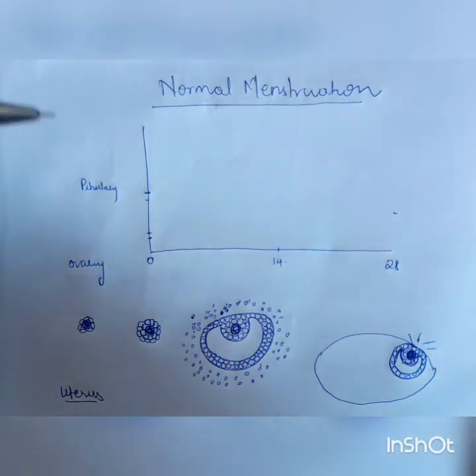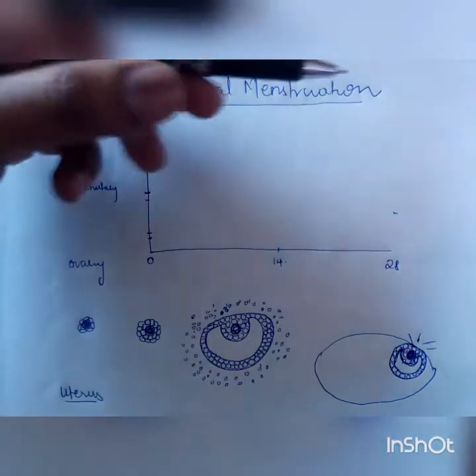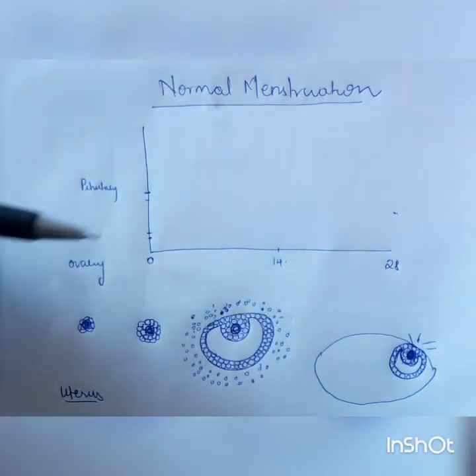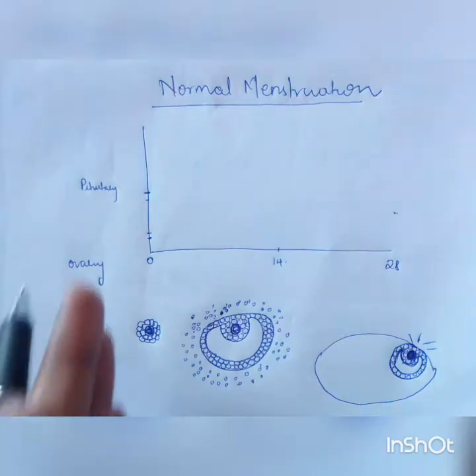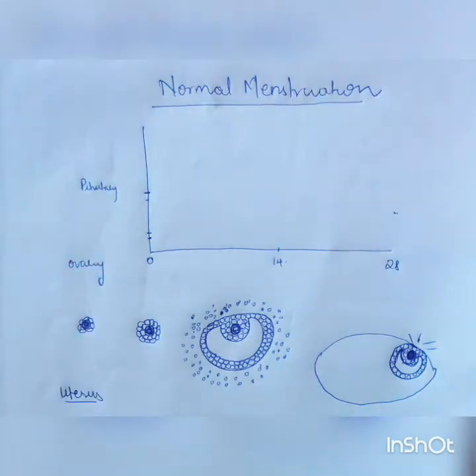I have divided the cycle — a normal menstrual cycle — at three different levels: pituitary, ovary, and the uterus. Let us start with what happens on day zero.